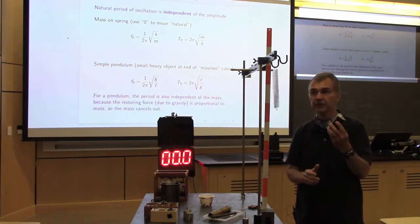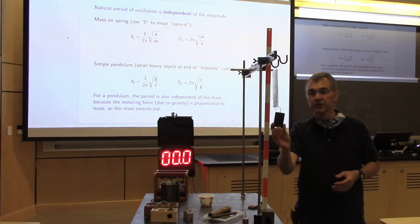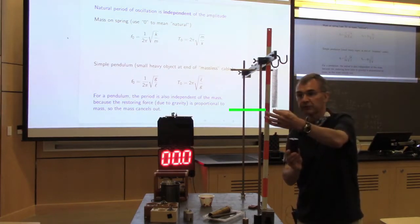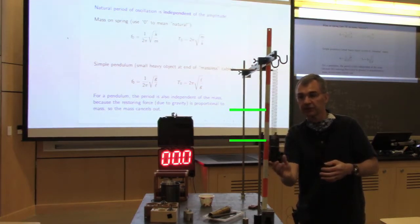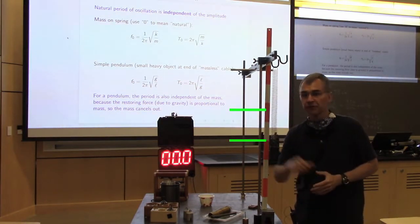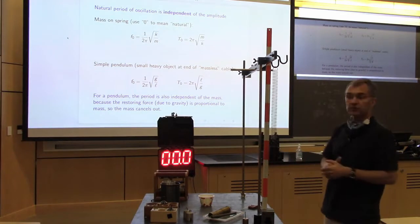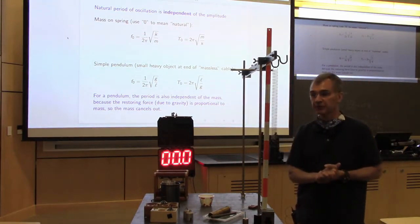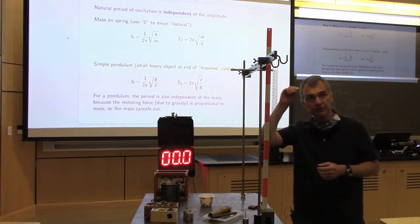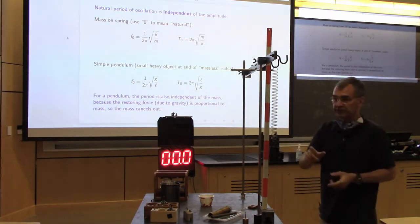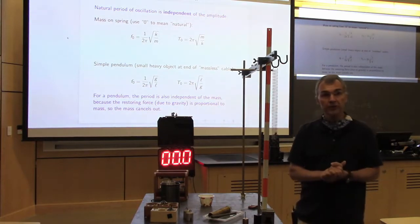Here's a one-kilogram mass — that's 9.8 newtons, about 10 newtons, multiplying by the acceleration due to gravity. Looking at where the bottom of the spring is and then adding the one-kilogram mass, the spring became 15 centimeters longer. Each stripe is 10 centimeters, so I measured 15 centimeters of extension. That gives us a spring constant of about 65 newtons per meter. Now we can work out the natural period of oscillation: 2π times the square root of mass divided by spring constant. For a one-kilogram mass, the natural period of oscillation should be 0.78 seconds.